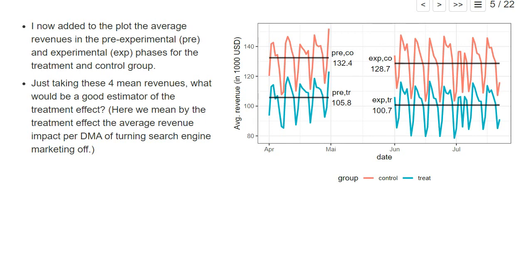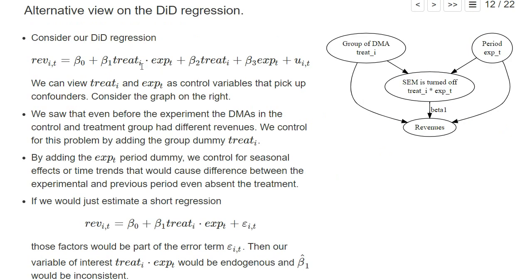It's not a big effect and it's not statistically significantly different from zero. Looking again at our linear regression: the interaction term treat_i multiplied by the experimental period dummy is our variable of interest — whether search engine marketing was turned off for a particular observation. The other two control variables can be thought of as controlling for unobserved confounders. For the experimental period dummy: we have observations from before the experiment in April and during the experiment in June, but there may be seasonal effects or time trends.